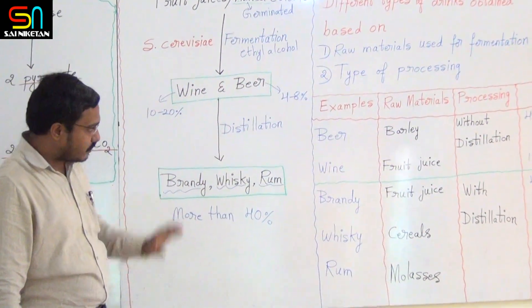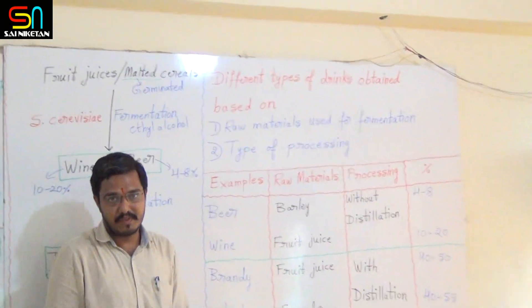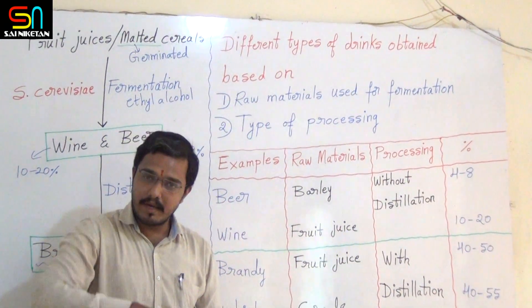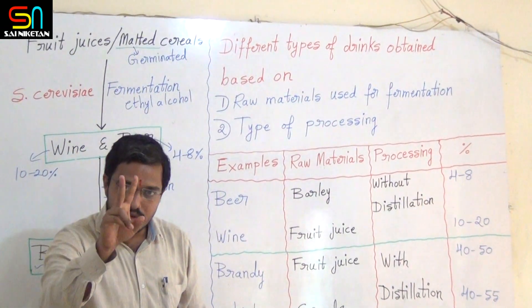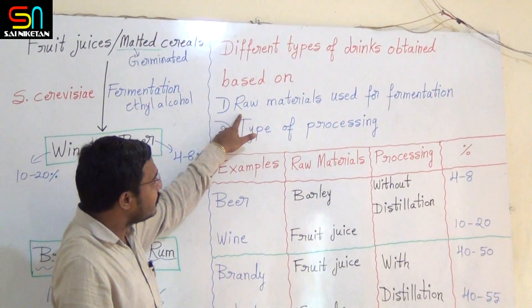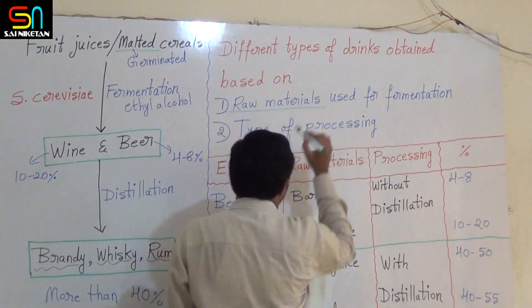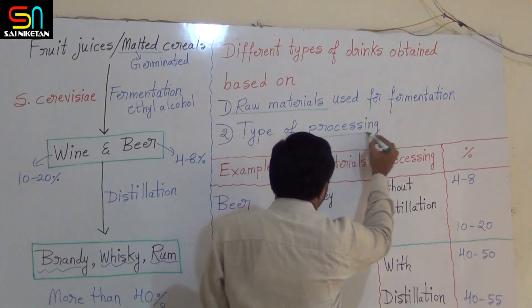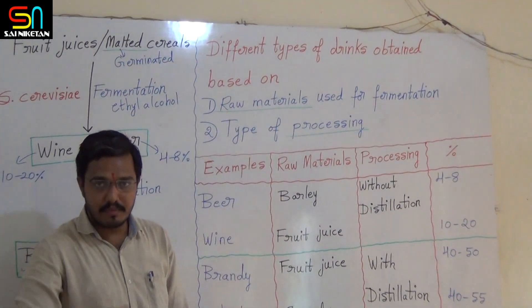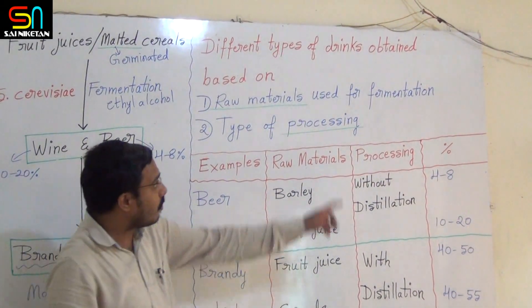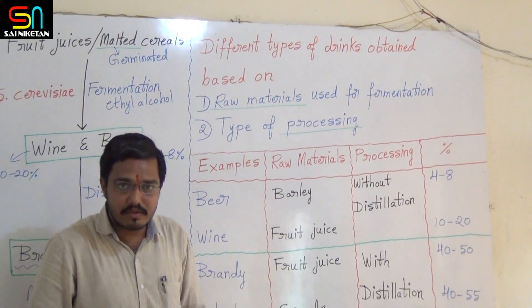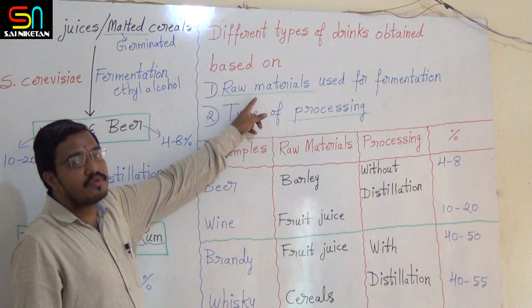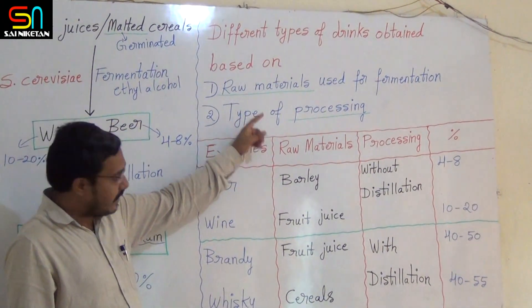Different types of drinks are obtained based on two things: first, based on the raw materials used for fermentation; second, based on the type of processing — whether obtained with distillation or without distillation.